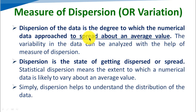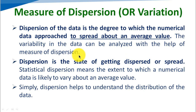Dispersion means some data that we have — how it has been spread in the nearby average value. The average value of data cases spread. The variability in the data can be analyzed with the help of measure of dispersion. If we have analyzed the variability in the data, that means how spread the data is, then we can analyze it with the help of measure of dispersion.